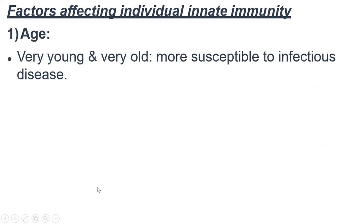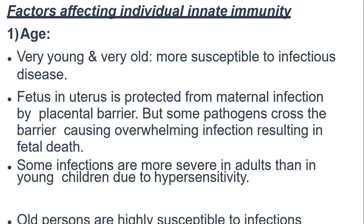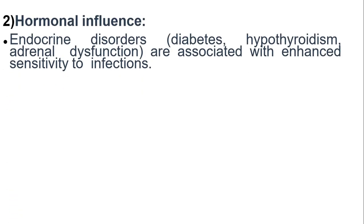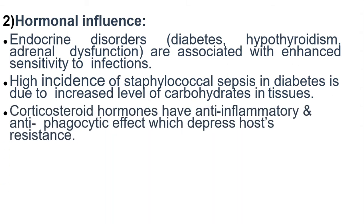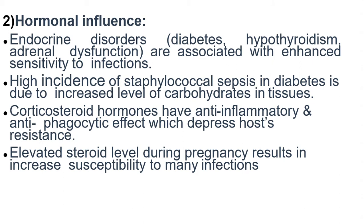Next are the factors affecting individual innate immunity. First is age — as already mentioned, the very young and very old are most susceptible to infectious disease. Second is hormonal imbalances. Endocrine disorders like diabetes, hypothyroidism, and adrenal dysfunction are associated with enhanced sensitivity to infections. High incidence of staphylococcal sepsis in diabetics is due to increased levels of carbohydrates in tissues. Corticosteroid hormones have anti-inflammatory and anti-phagocytic effects which depress host resistance. Elevated steroid levels during pregnancy result in increased susceptibility to many infections.